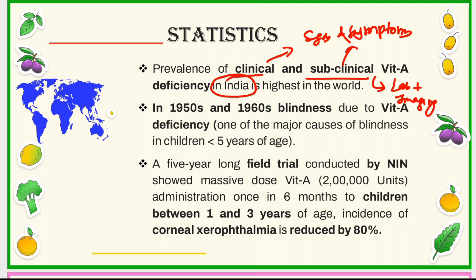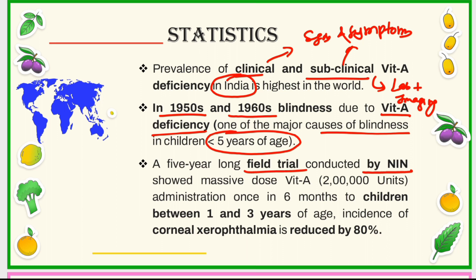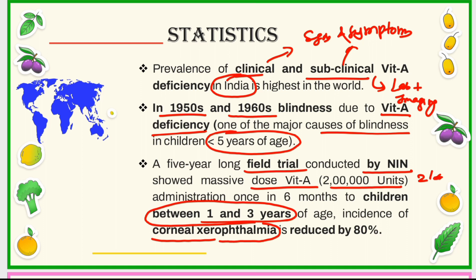In the decade of the 1950s and 1960s, it was found that blindness due to vitamin A deficiency was one of the major causes of blindness among children under five years of age. A field trial conducted by the NIN — National Institute of Nutrition — showed that when children of age group 1 to 3 years were administered a massive dose of vitamin A, that is 2 lakh international units, the incidence of new cases of corneal xerophthalmia could be reduced by 80 percent — a very significant reduction.